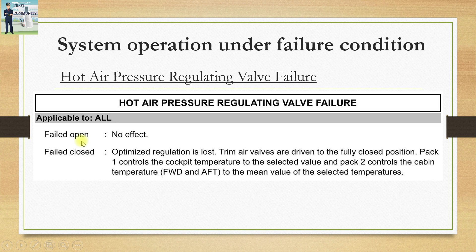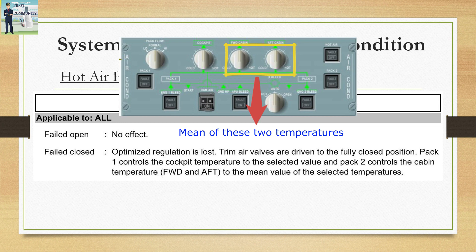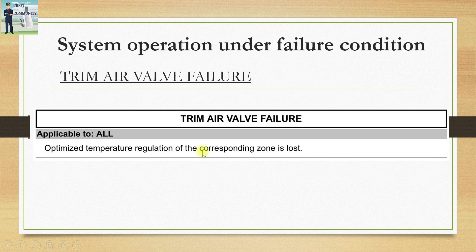If the hot air pressure regulating valve fails open (stuck open), it has no effect because the trim air valves can still optimize temperature. However, if it fails closed (stuck closed), there is no use for the trim air valves — they are driven to the fully closed position. In this case, pack 1 controls the cockpit temperature to the selected value, and pack 2 maintains the mean value of the forward and aft cabin temperatures selected from the cockpit. A trim air valve failure results only in loss of optimized temperature regulation for that corresponding zone.